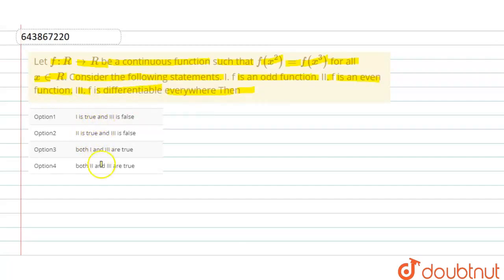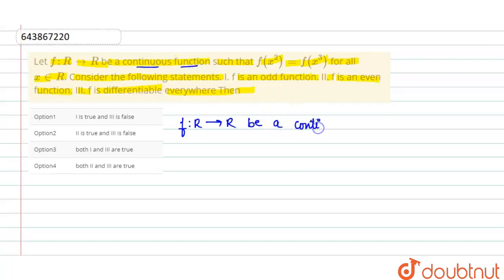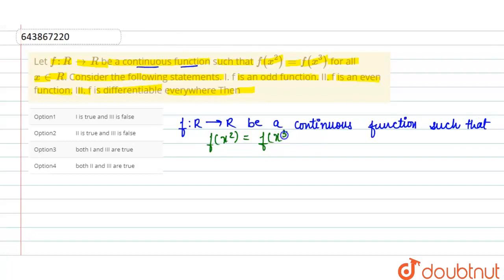हमने बताना है कि कौन सा option correct है। हमें given question में f : ℝ → ℝ be a continuous function यह mentioned है। Given equation है: f(x²) = f(x³). यह equation number 1 है, और यह given है कि for all x belongs to real number.